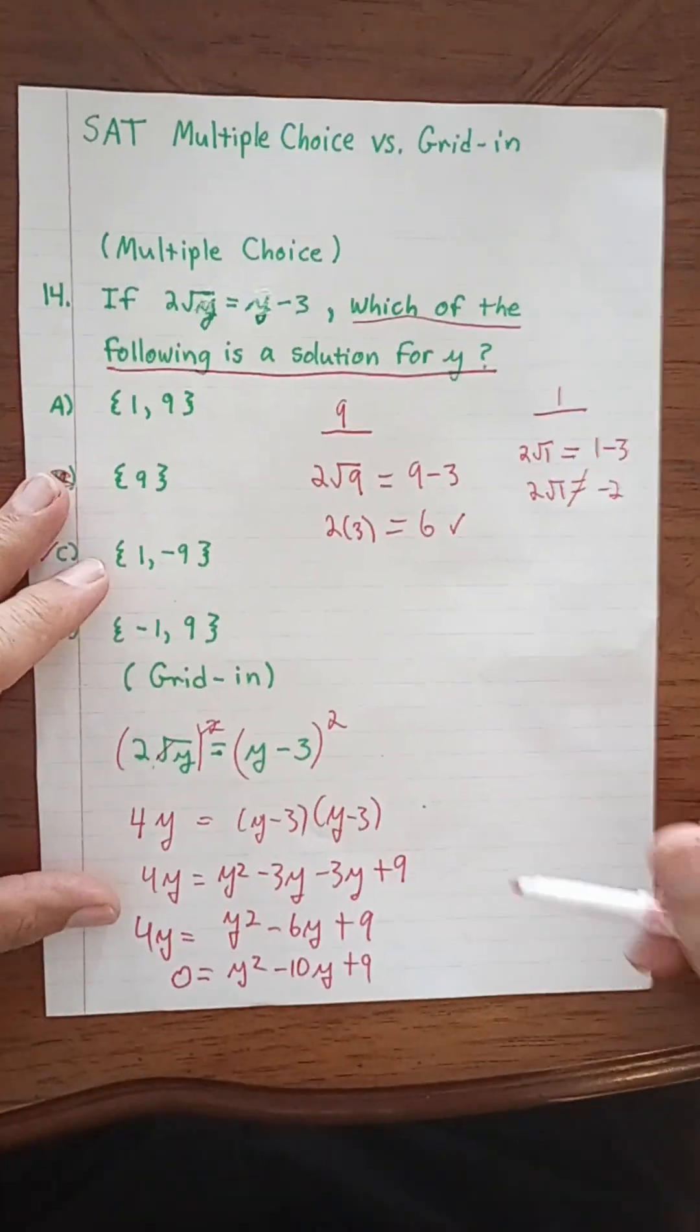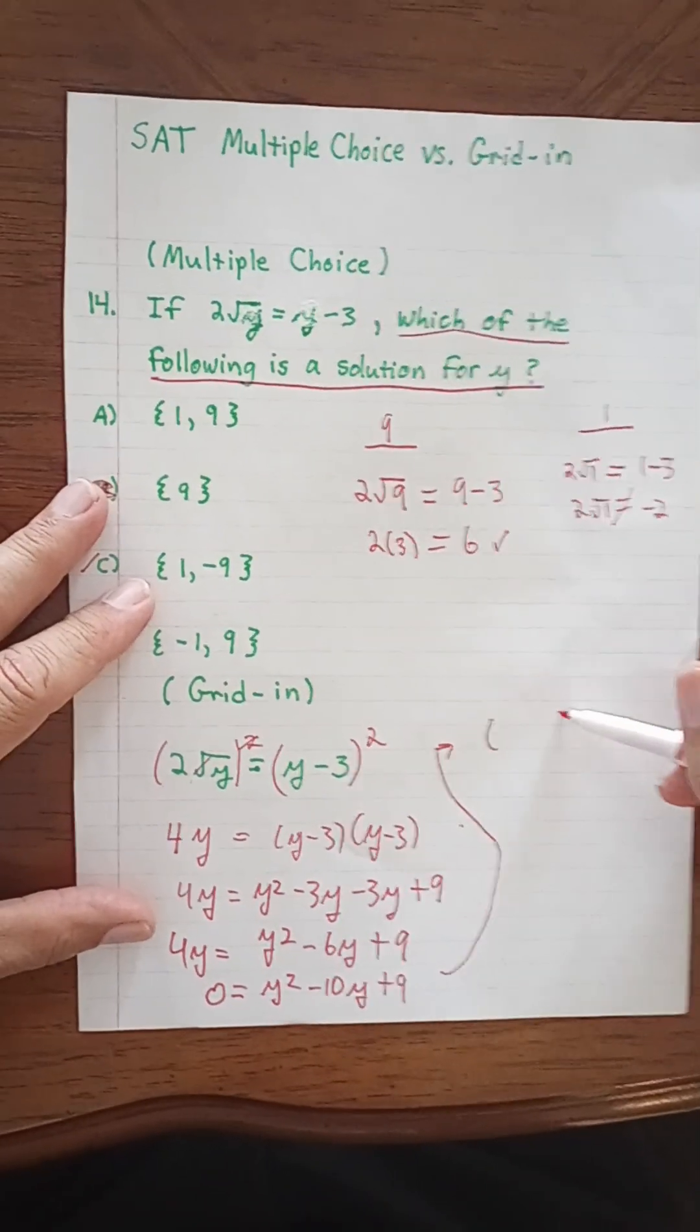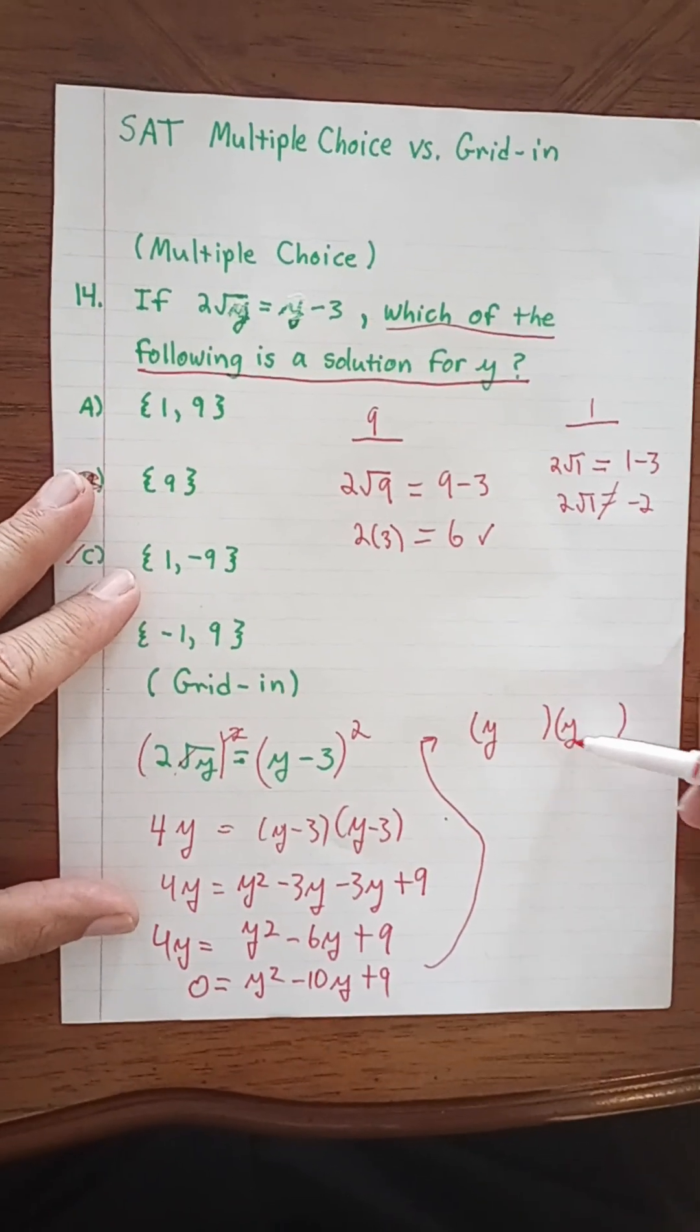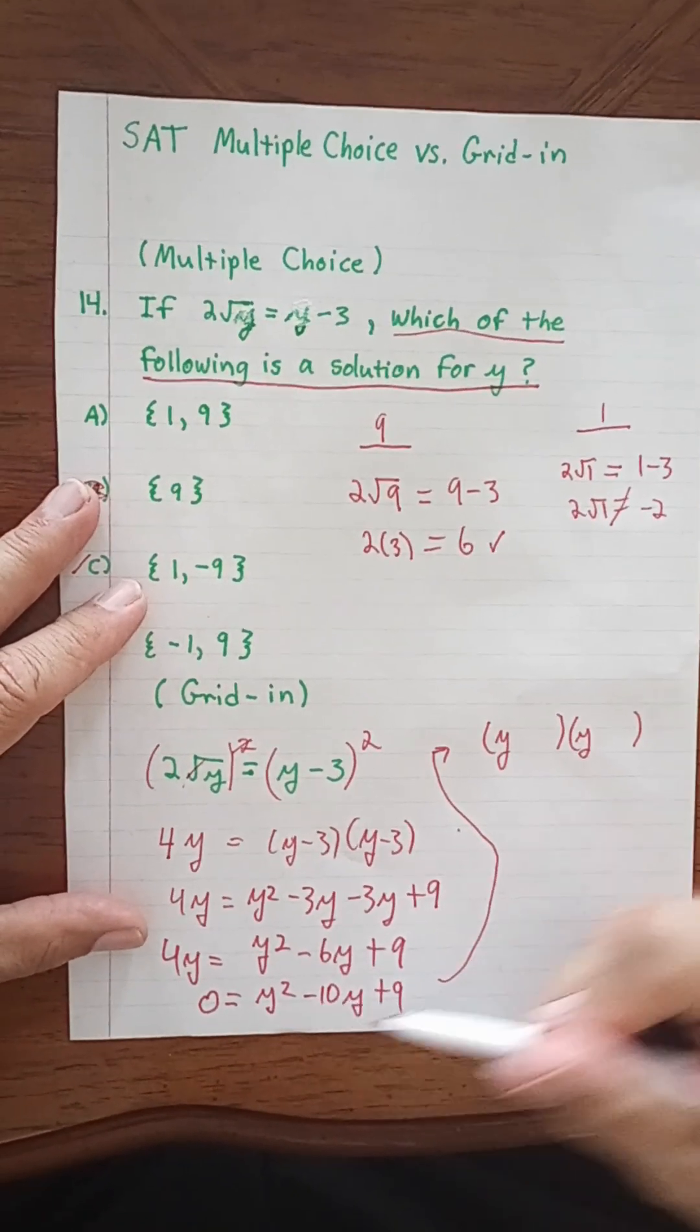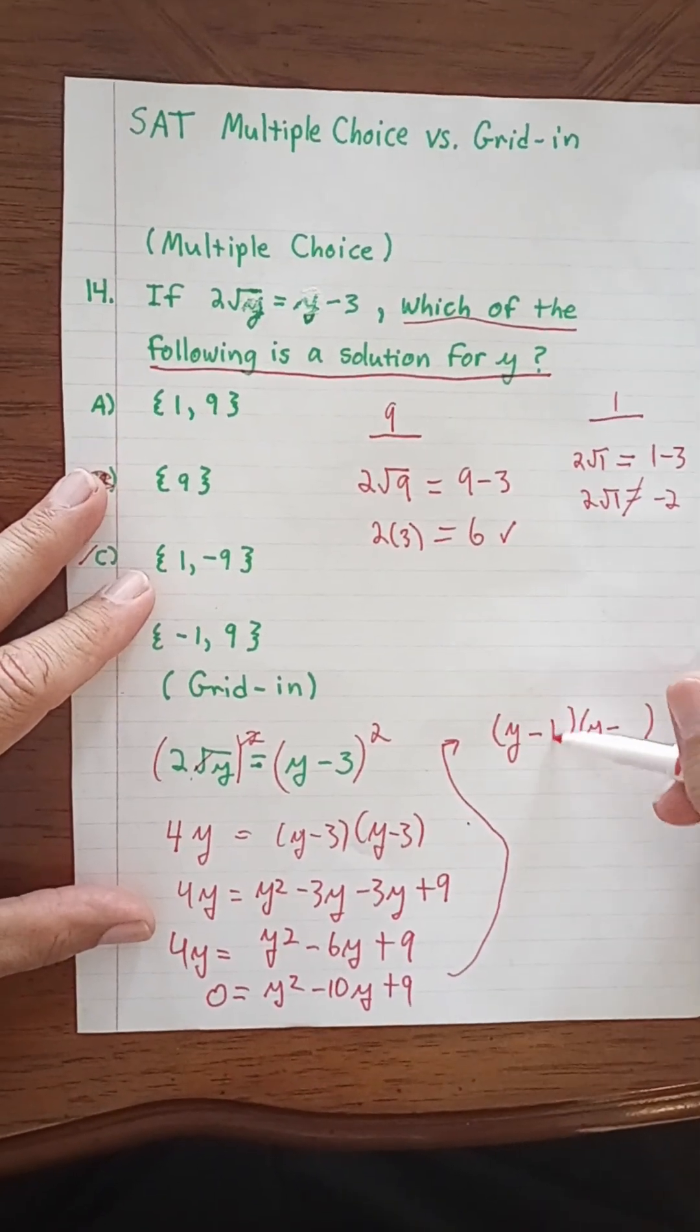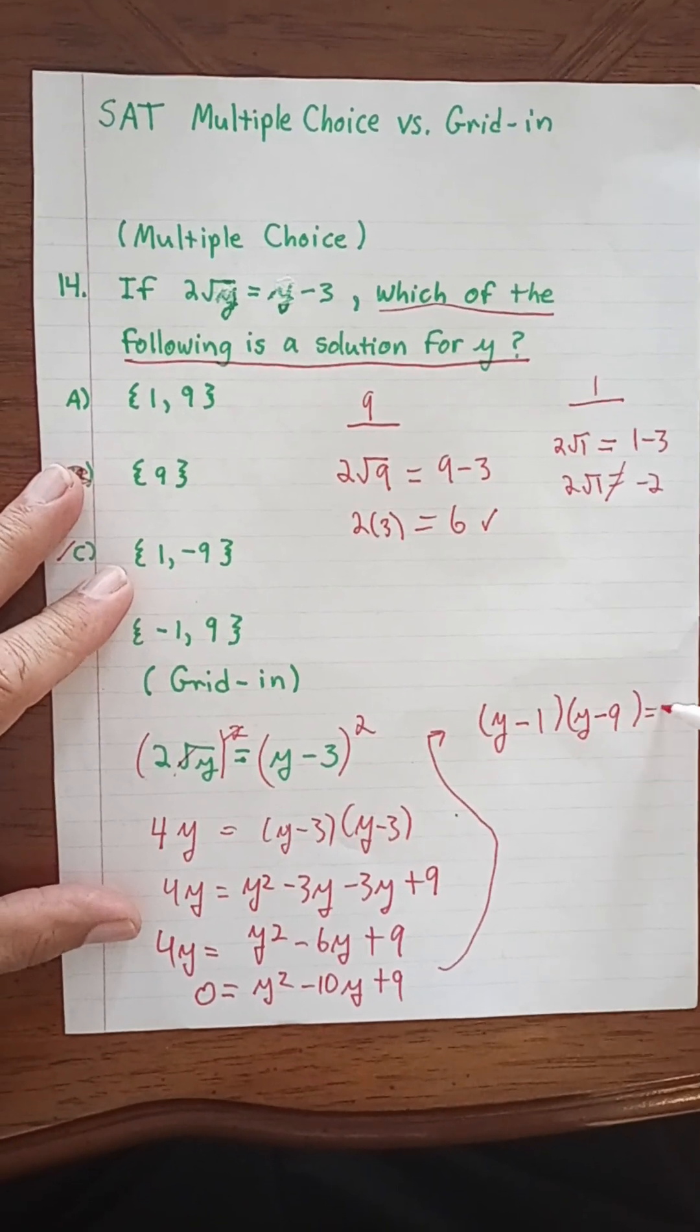And then here we would bring this up here, do our parentheses, and then we would say y and y. This is plus and that's minus, which means we need two negative signs. And we get y minus 1 times y minus 9 equals 0.